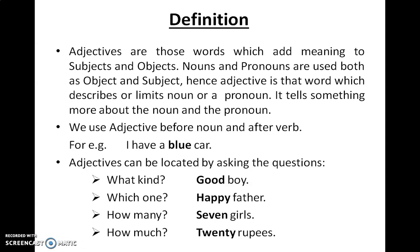Here is the definition of adjectives. An adjective is a word used to add something to the meaning of a noun or a pronoun. Adjectives make our language beautiful. We use adjectives before a noun and after a verb. Words which answer the questions like 'what kind,' 'which one,' 'how many,' and 'how much' are surely adjectives.